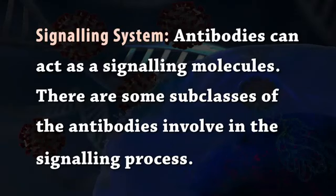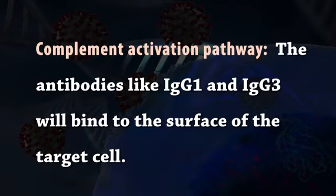Signaling system: antibodies can act as signaling molecules. IgG4 is involved in some chemical signaling and also serves as a receptor. Complement activation pathway: antibodies like IgG1 and IgG3 bind to the surface of the target cell. Complement proteins come and bind to the FC regions of the antibody and get activated, then make pores on the membrane of the target cell and lyse the cell.